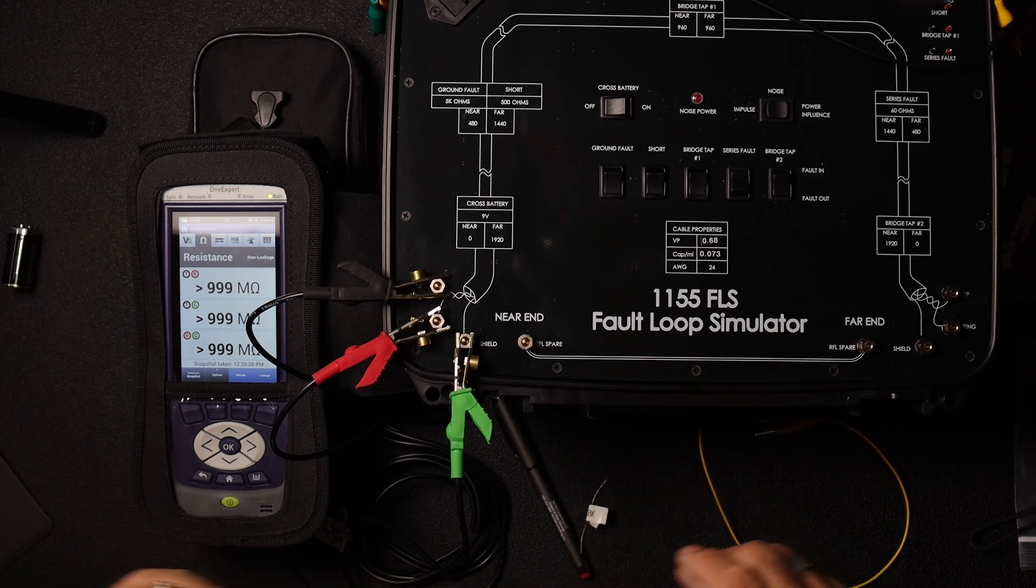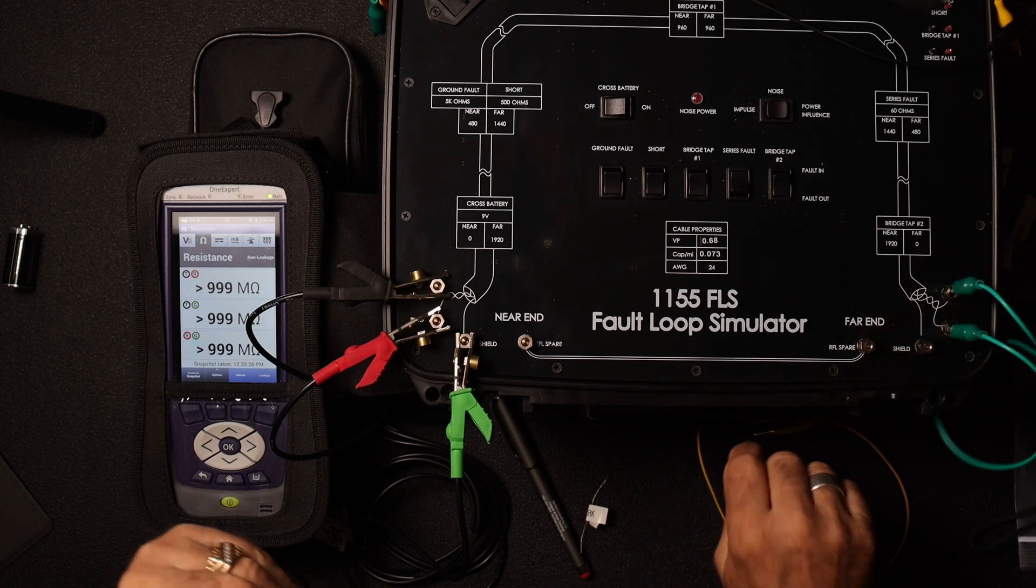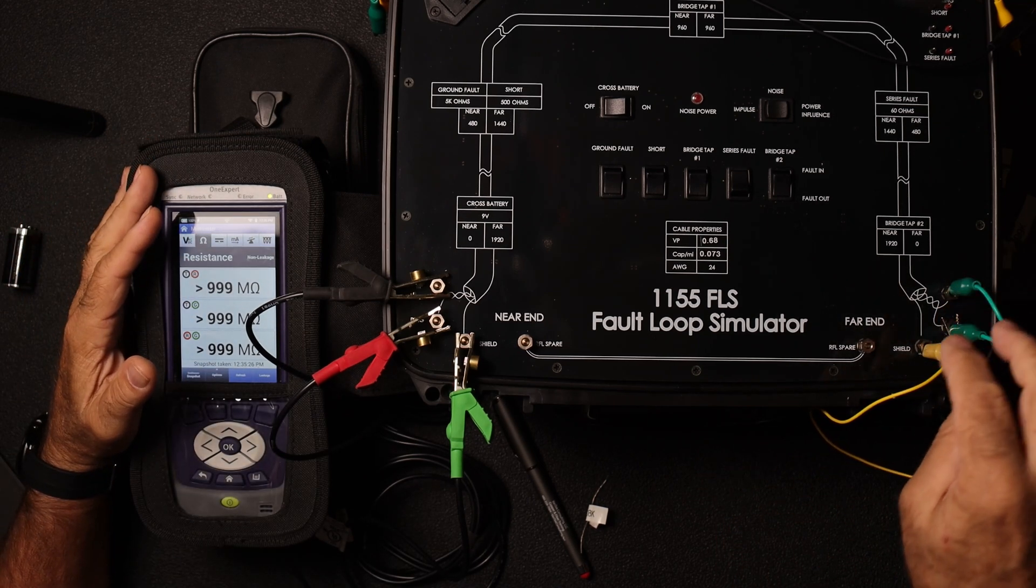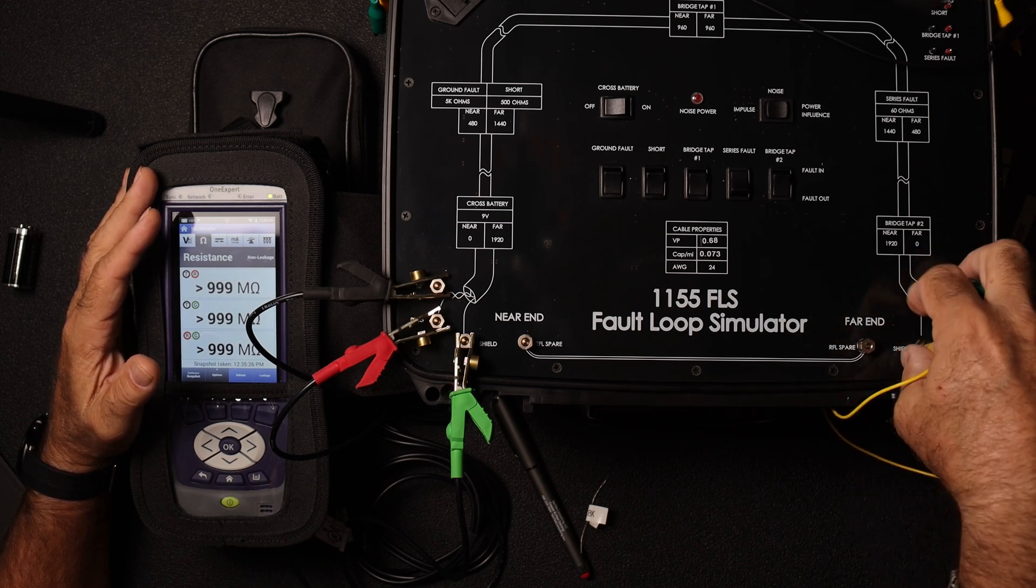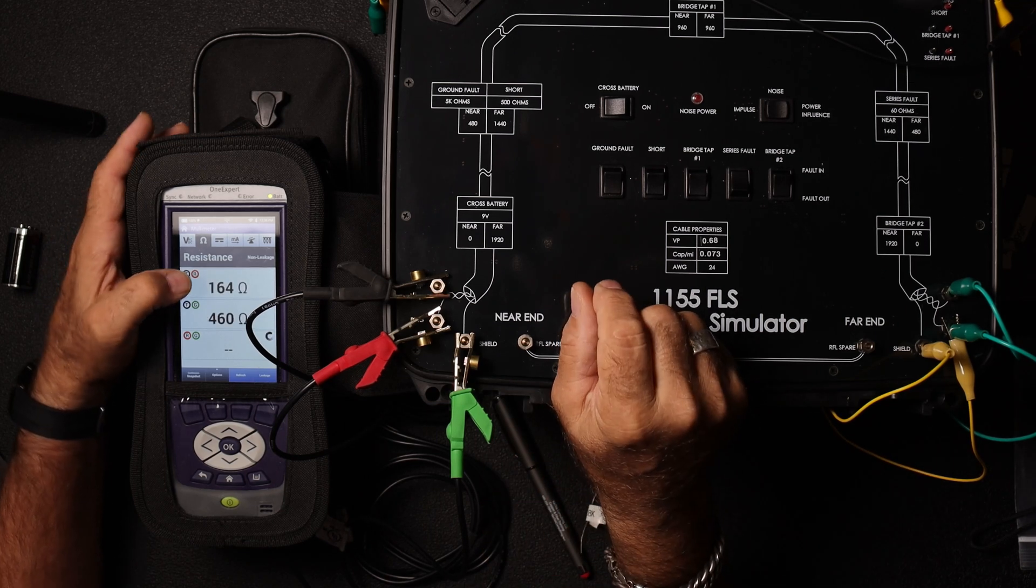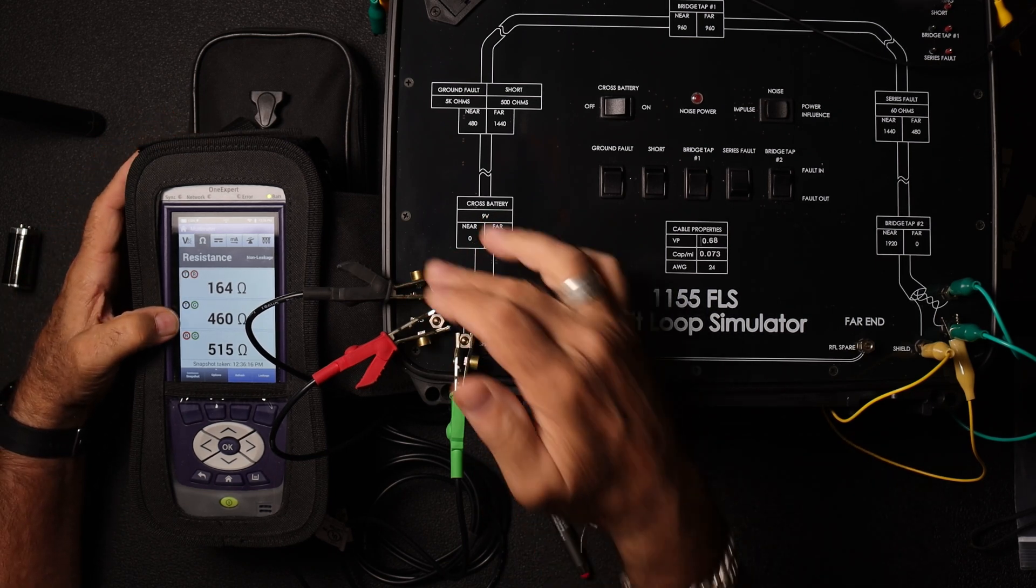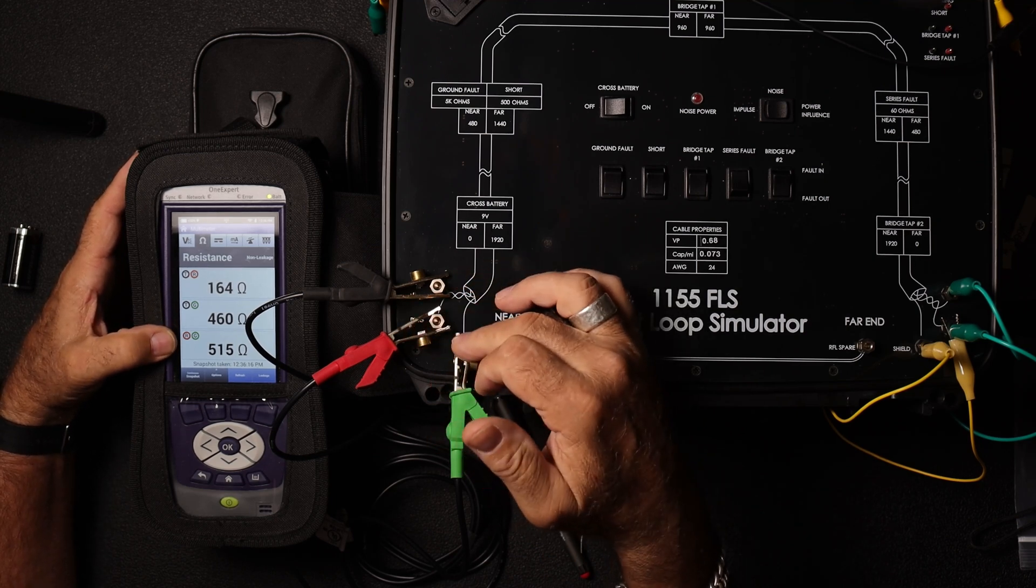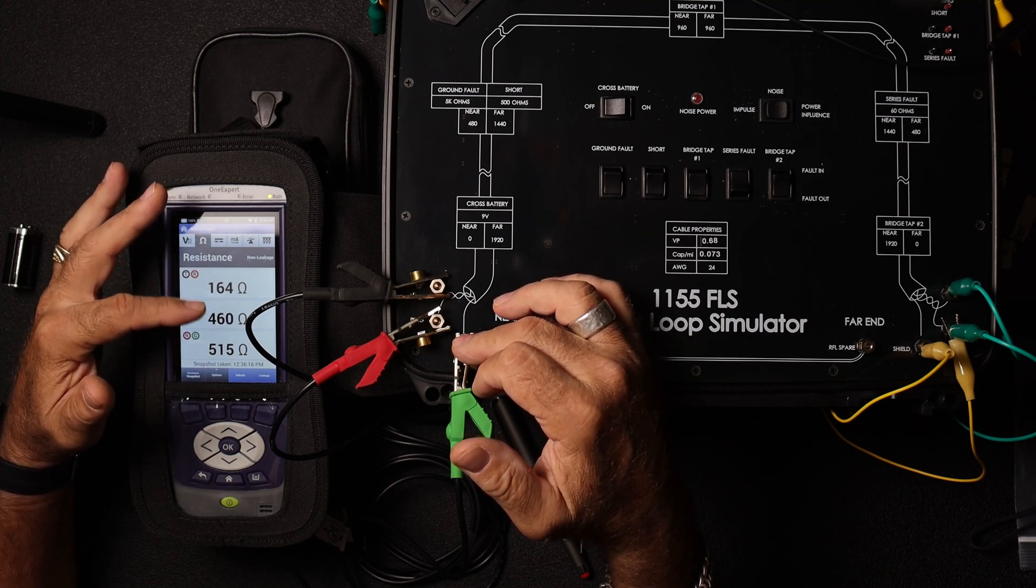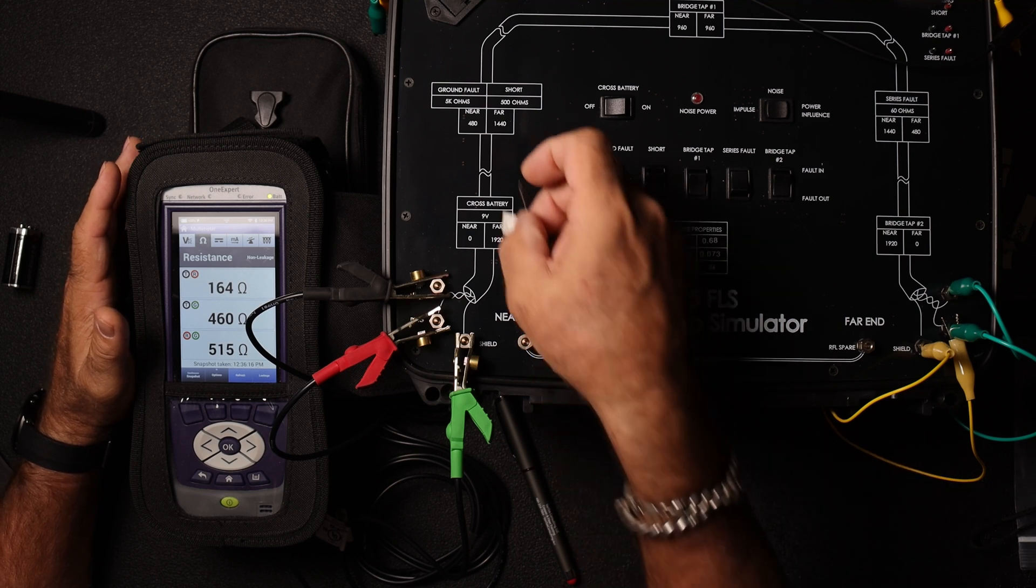So how do we isolate this down or how do we find out what the problem is? We need to do what's called a resistive balance test. And what we're going to do is we're going to strap the far end. Again, this is going tip to ring and then strapping that off to the ground. So all of these are basically commoned up here. We'll go ahead and do our resistive test again. So we had 999 on our tip to ring circuit. We have 164 ohms, but on our tip to ground, we have 460 and our ring to ground, we have 515. So that's about 60 ohms of difference there.